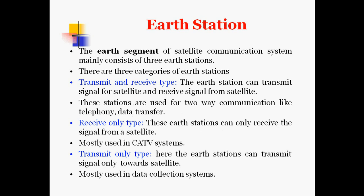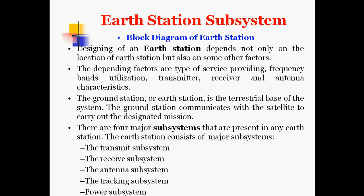The earth segment of a satellite communication system may consist of three categories of earth stations. First, the transmit and receive type, where the earth station can both transmit signals to a satellite and receive signals from the satellite — used for two-way communication like telephony or data transfer. Second, the receive-only type, which can only receive signals from a satellite and cannot send; these are mostly used in CATV systems.